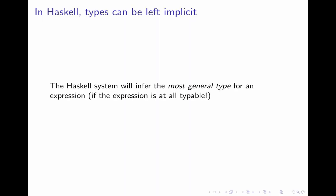Well in Haskell you don't need to write the types of your variables. Haskell uses implicit typing. The system will infer the most general type for an expression if the expression is at all typeable. Later in today's podcast and in the next section we'll see what we mean by most general type because there's a lot going on here.